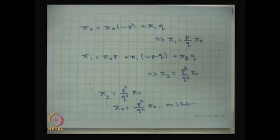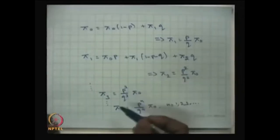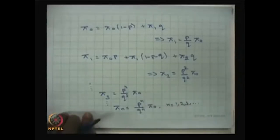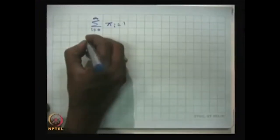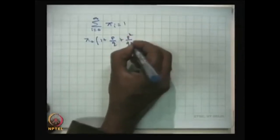This is how we solve the homogeneous equation pi equals pi P. We must be careful: the trivial solution is 0, but we want the non-trivial solution, so we apply the normalization condition — summation of pi_i equals 1. Using this normalization, pi_0 times (1 plus p/q plus (p/q)² plus ...) equals 1, so pi_0 equals 1 divided by the sum of that geometric series.